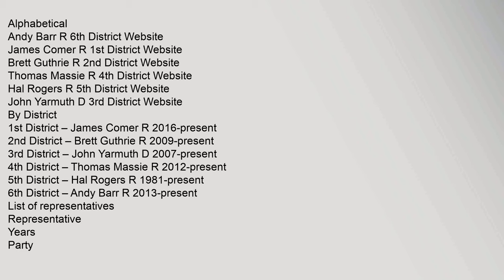Alphabetical: Andy Barr (R, 6th district); James Comer (R, 1st district); Brett Guthrie (R, 2nd district); Thomas Massey (R, 4th district); Hal Rogers (R, 5th district); John Yarmouth (D, 3rd district). By district: 1st district — James Comer (R, 2016–present); 2nd district — Brett Guthrie (R, 2009–present); 3rd district — John Yarmouth (D, 2007–present); 4th district — Thomas Massey (R, 2012–present); 5th district — Hal Rogers (R, 1981–present); 6th district — Andy Barr (R, 2013–present). List of representatives: Representative, years, party, district, notes.